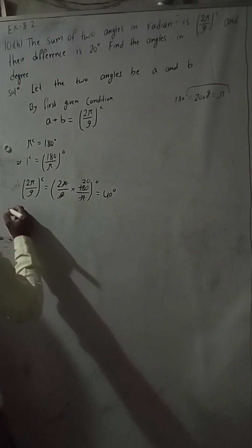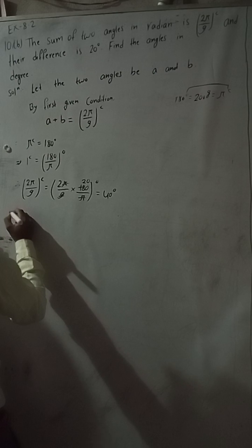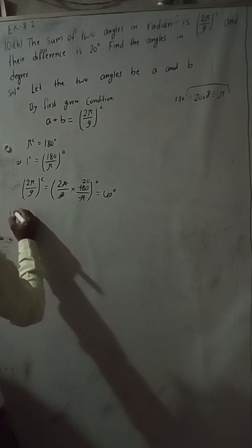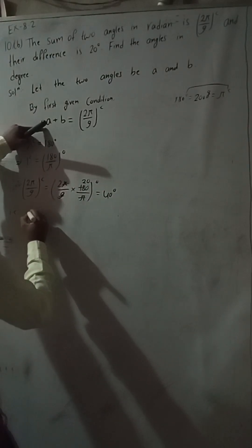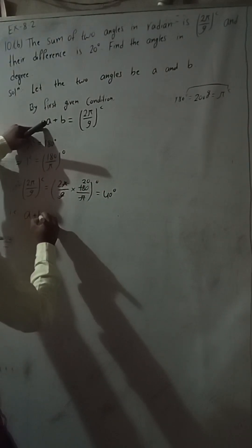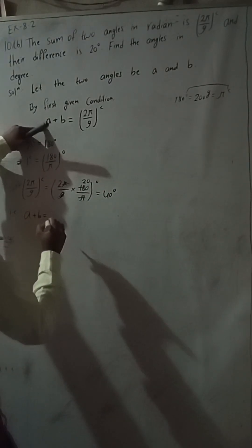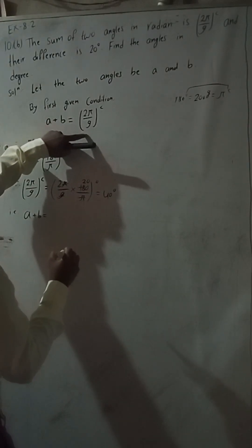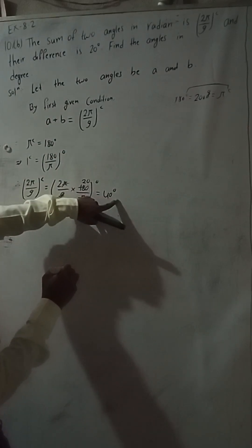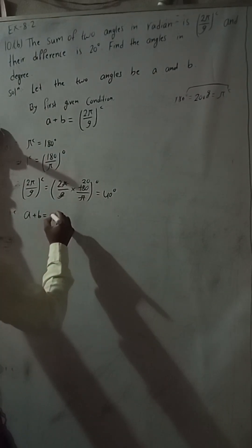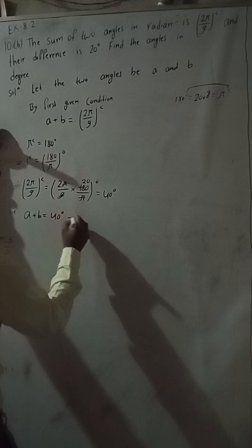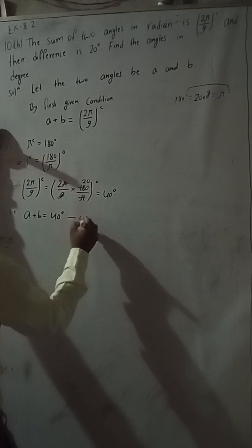Therefore A plus B is equal to 2π/9, and 2π/9 equals 40 degrees, so A plus B equals 40 degrees. This is our equation 1.